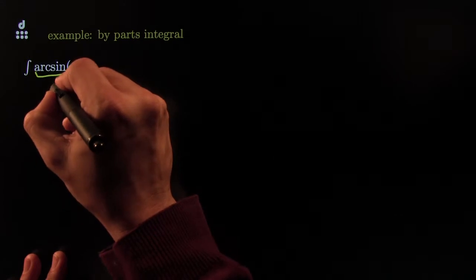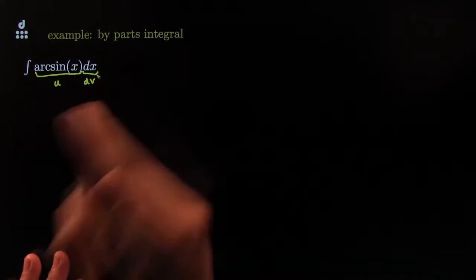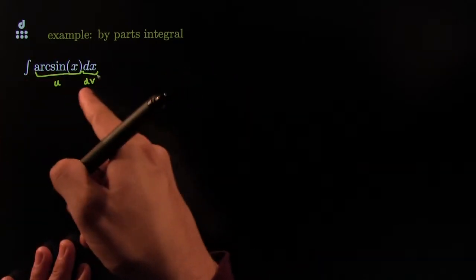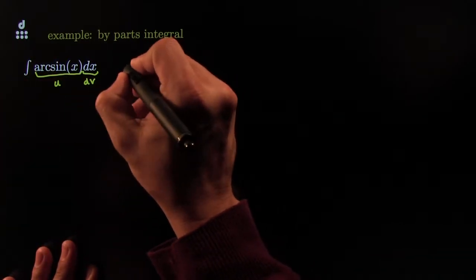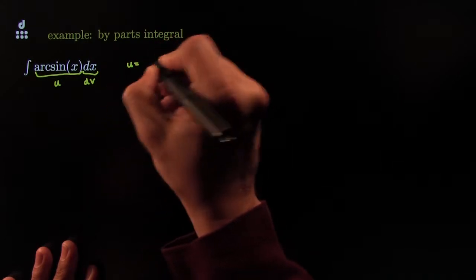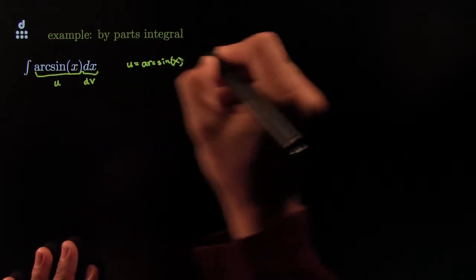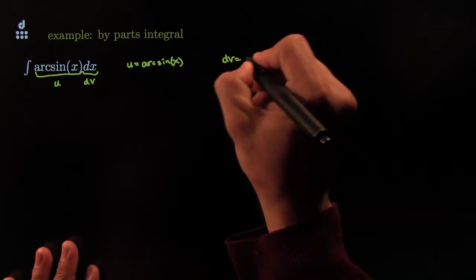One of them should be called u and the other one should be called dv. Sometimes it's more interesting because you may have more than two pieces, but let's try our luck here and see how it goes. We force u to be equal to arcsine of x. That leaves us with no choice. dv has to be dx.